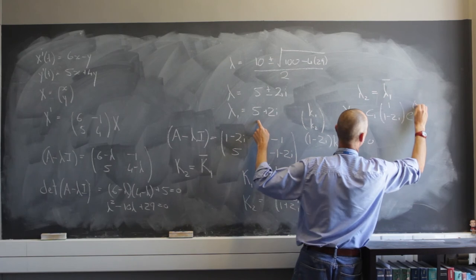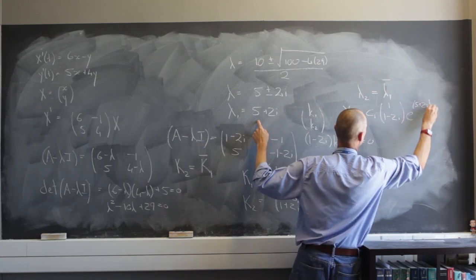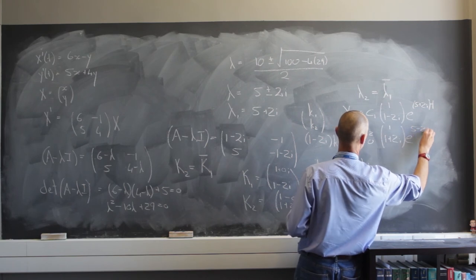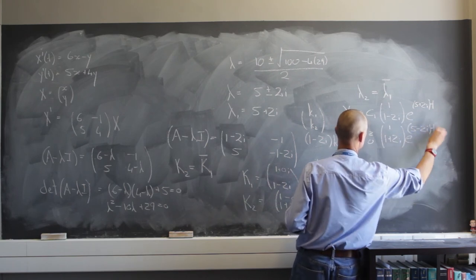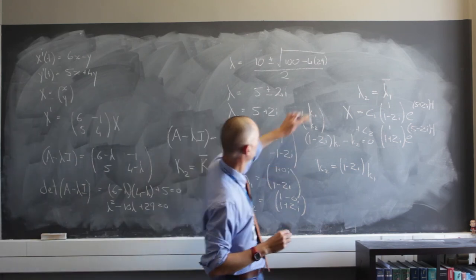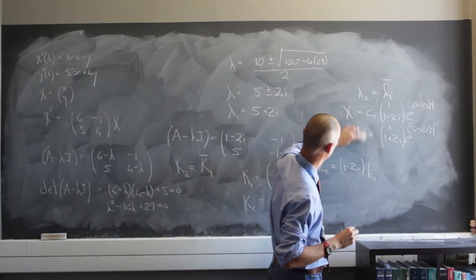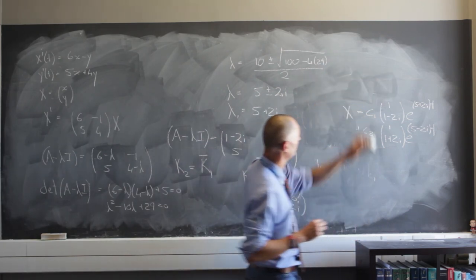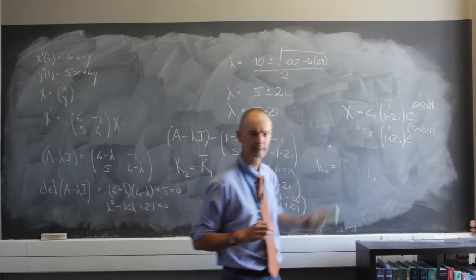And it's going to be e to the power 5 plus 2i t, plus c sub 2, which was going to be 1 and 1 plus 2i, e to the power of 5 minus 2i t. I hope you can see that. So that was going to be my final general set of solutions there. Now we'll expand a bit on this in the next example. Thank you.